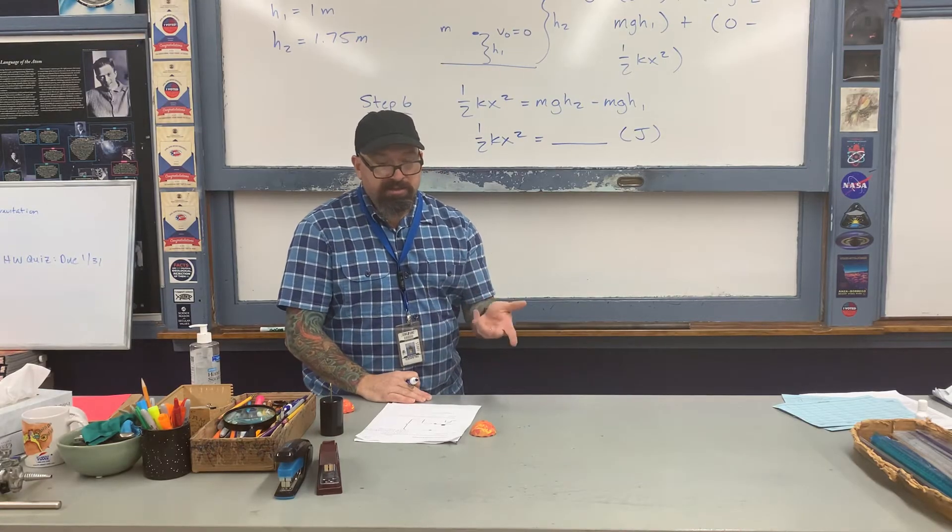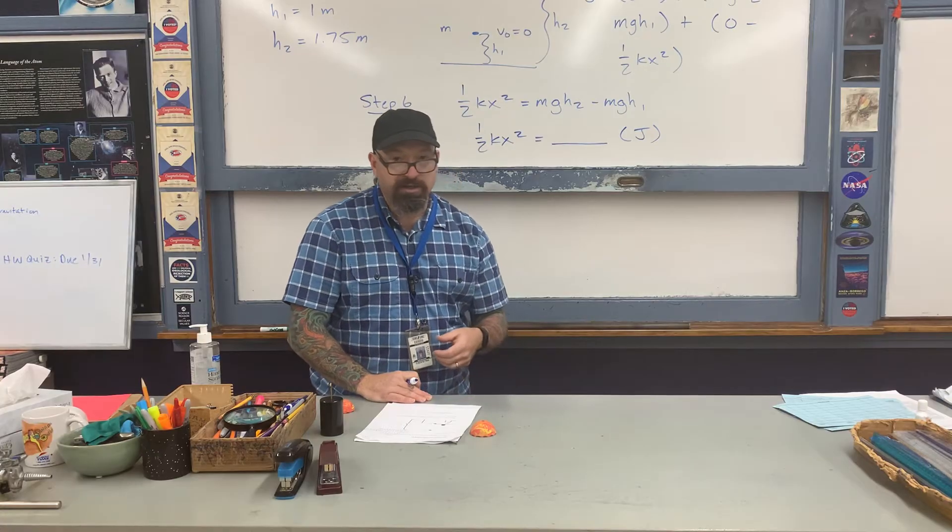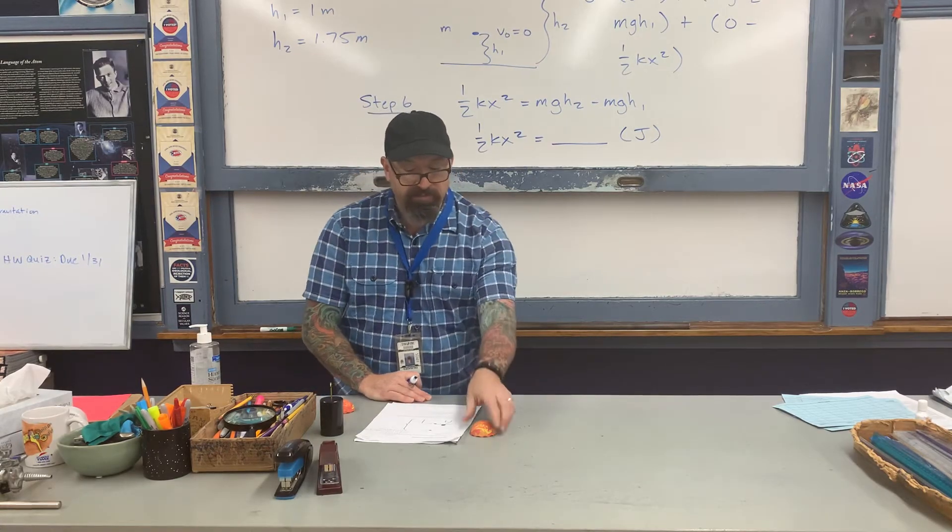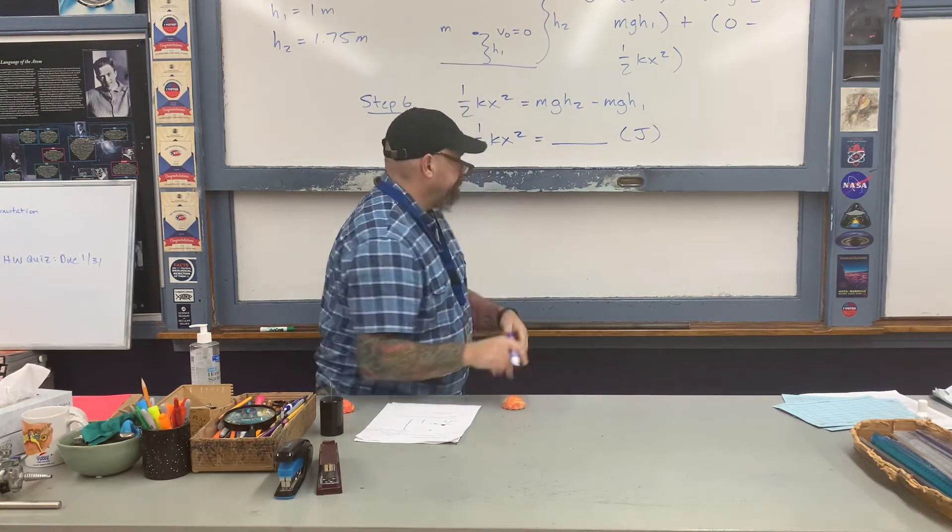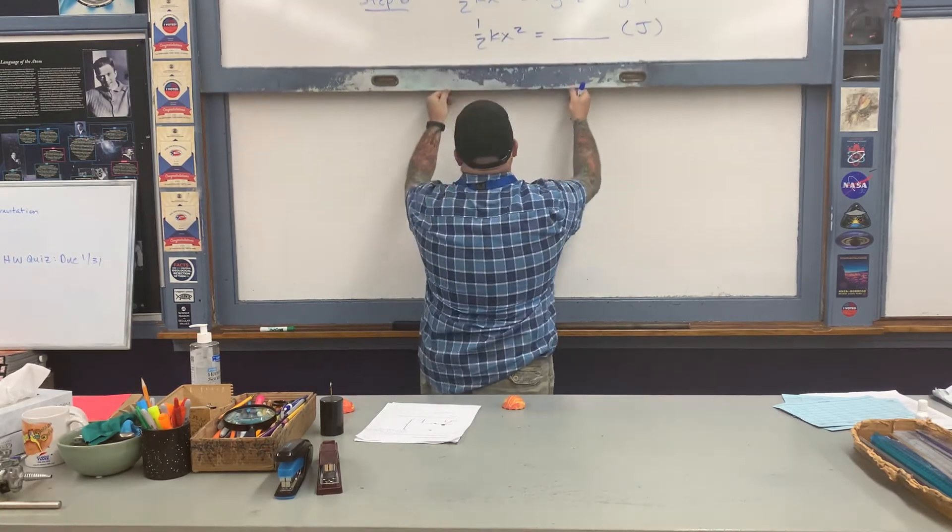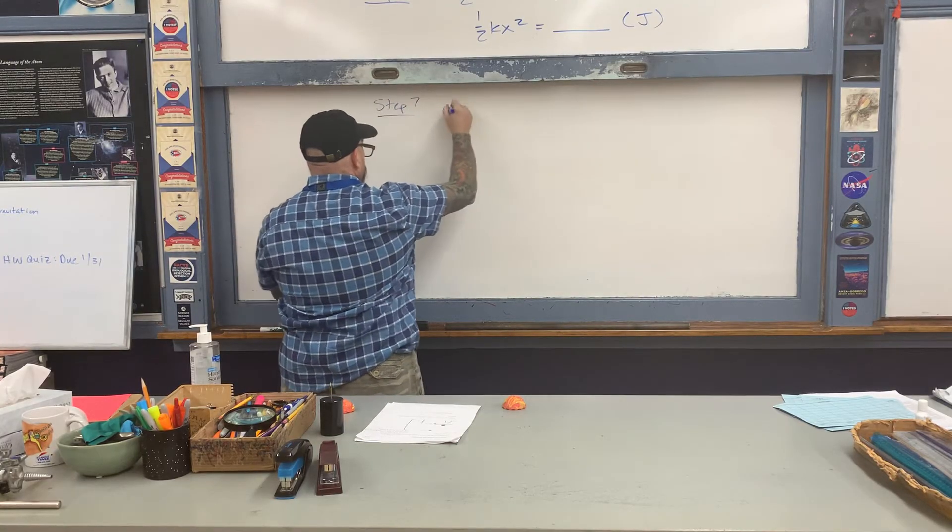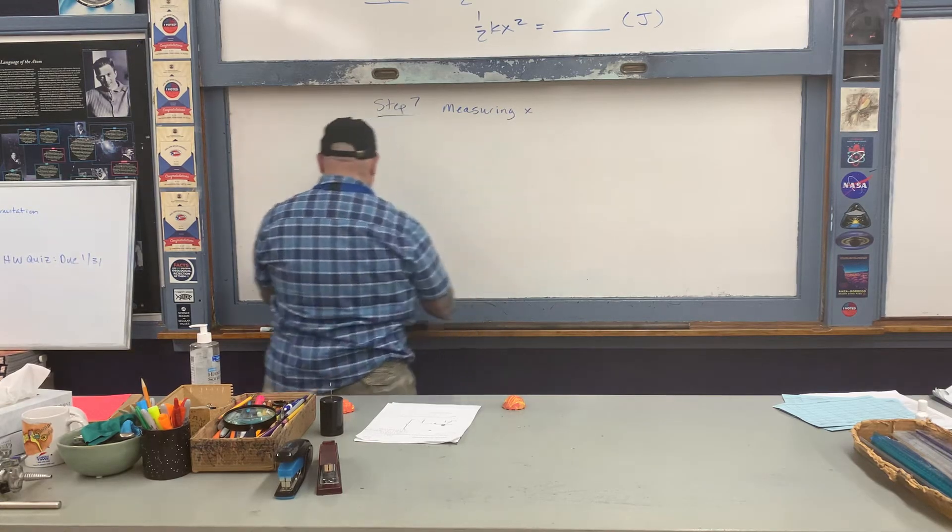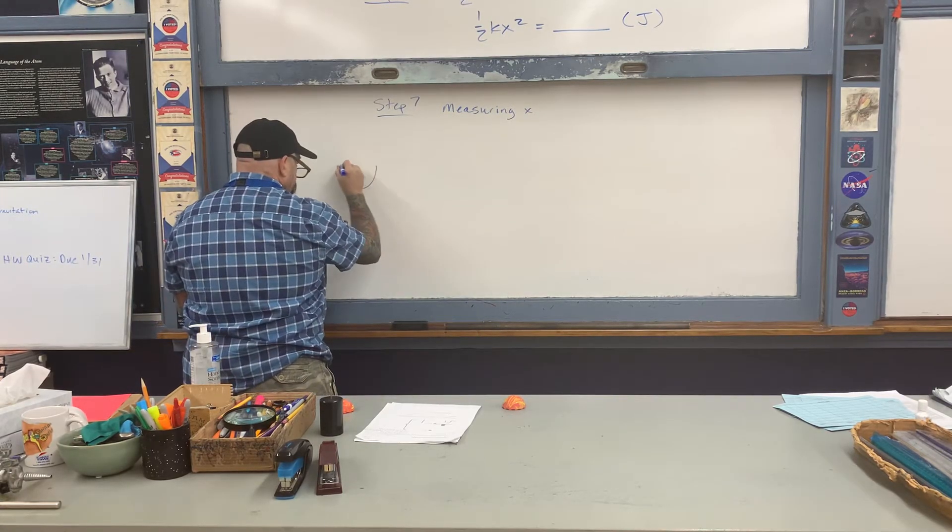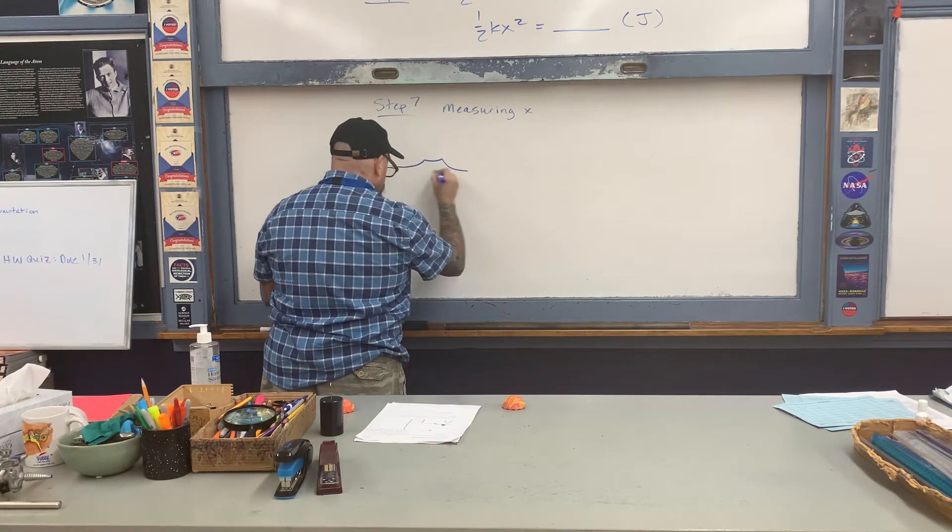Now we get to step seven. In step seven you're going to make a measurement—or I'm going to make a measurement—for the displacement x of the popper when it's been folded. Here's how I'm going to measure x. This is step seven. Here's the popper before I fold it, and this is what the popper looks like after I fold it.